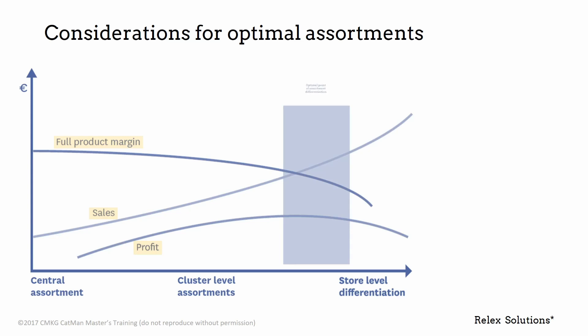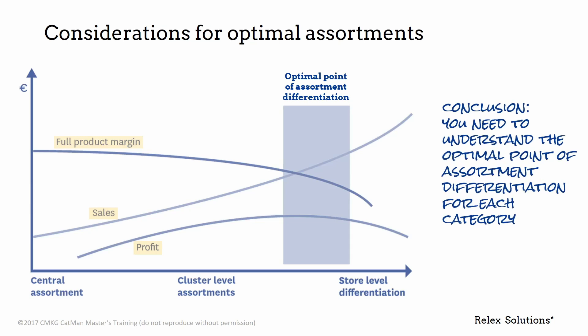This zone I've got marked in indicates the degree of assortment differentiation — a sustainable position balancing low costs with great customer-focused service, which yields the most profit for the retailer.